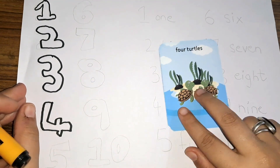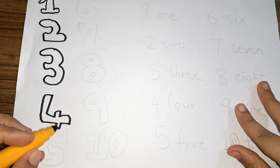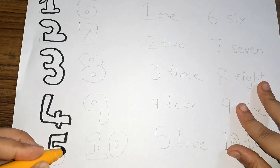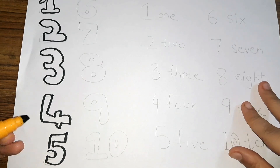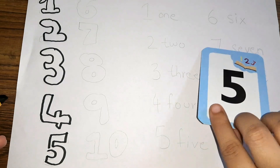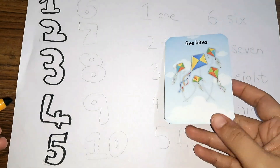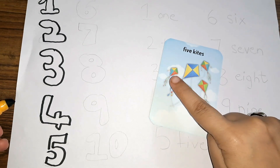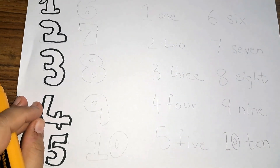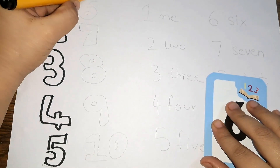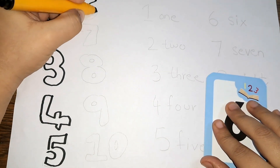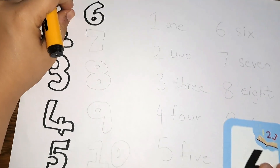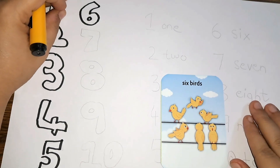Number 4 — 4 turtles: 1, 2, 3, 4. 4 turtles. Number 5 — 5 kites: 1, 2, 3, 4, 5. 5 kites.